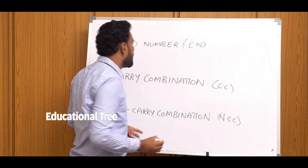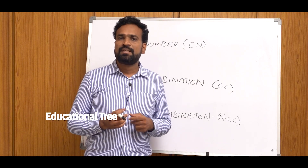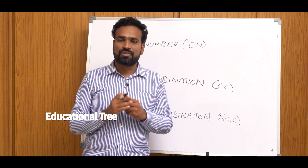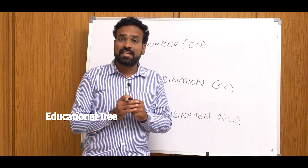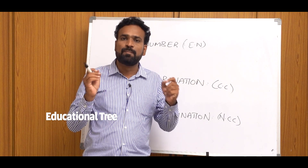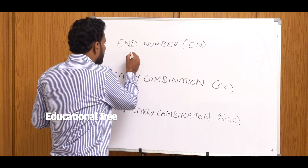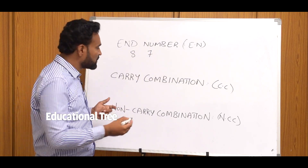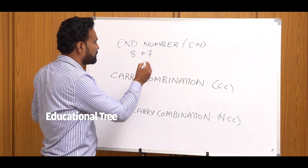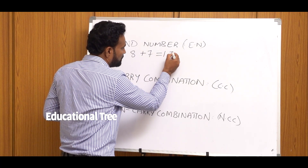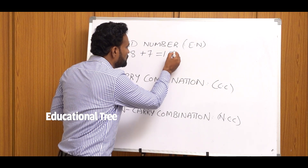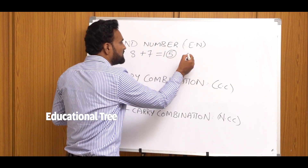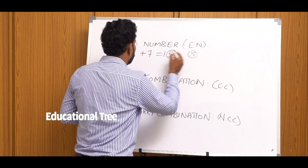What is End Number? If we add two single-digit numbers, we use the digit in the units place of the answer — that is called the End Number. For example, 8 plus 7 equals 15. In 15, the units place digit is 5. So 5 is the End Number of 8 and 7.